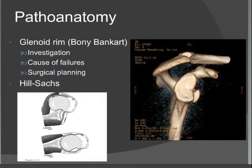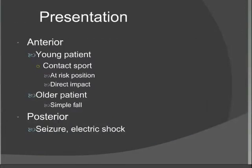In regard to anterior dislocations, the typical patient is young and generally male, involved in contact sport. The dislocation most likely occurs in the at-risk position — 90 degrees of abduction, external rotation, with a force directing the humerus anteriorly. They can also occur from direct impact injuries, and some studies have shown that direct impact injuries are more likely to cause long-term instability than the at-risk position mechanism.